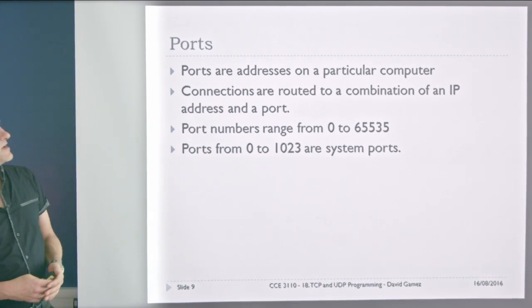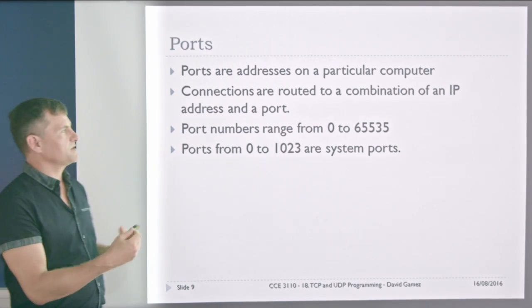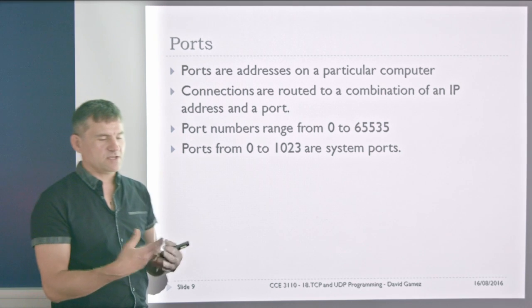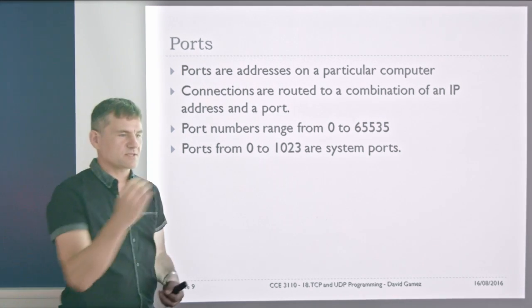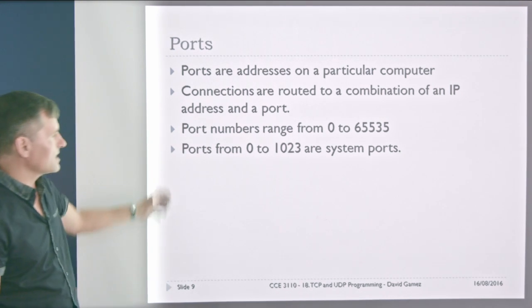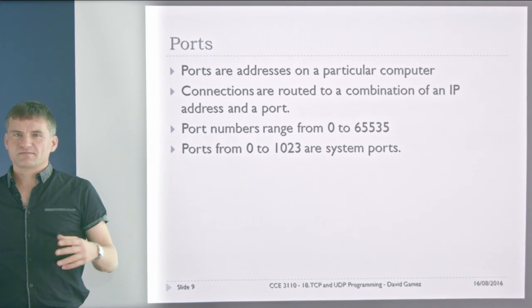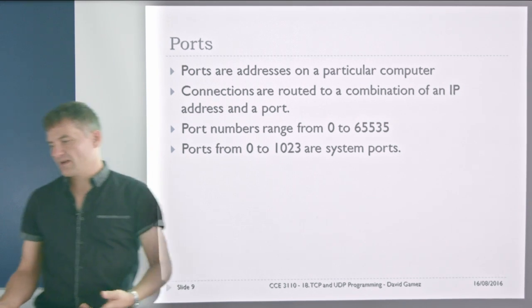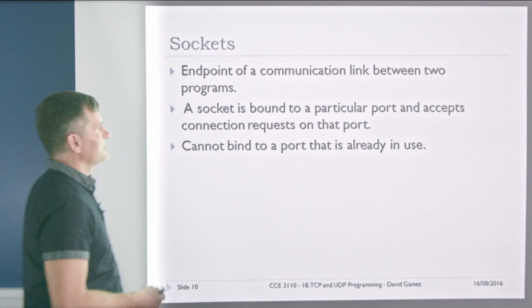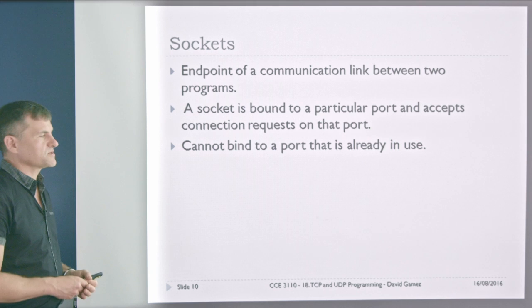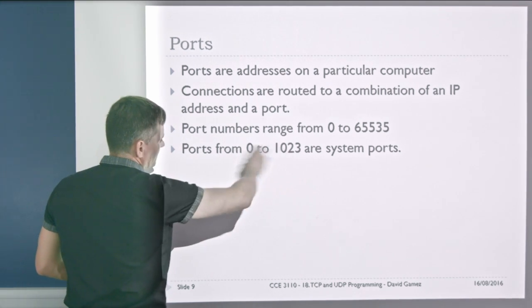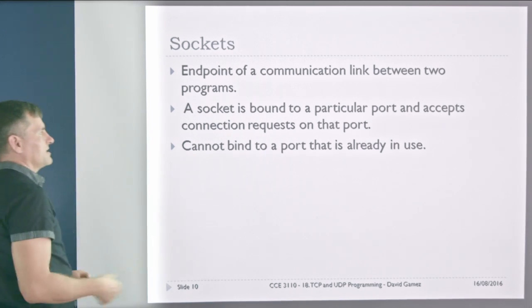Ports are an address on a particular computer. Connections are routed to a combination of an IP address and a port, so TCP and UDP are port-to-port connections, with ports ranging from 0 to 65,535. Ports 0 to 1023 are system ports — I wouldn't recommend using these. Pick something a bit arbitrary, and I'll explain how to deal with port conflicts later. Sockets are bound to a particular port and accept connection requests on that port; you can't bind to a port that's already in use, so avoid that range of system ports.